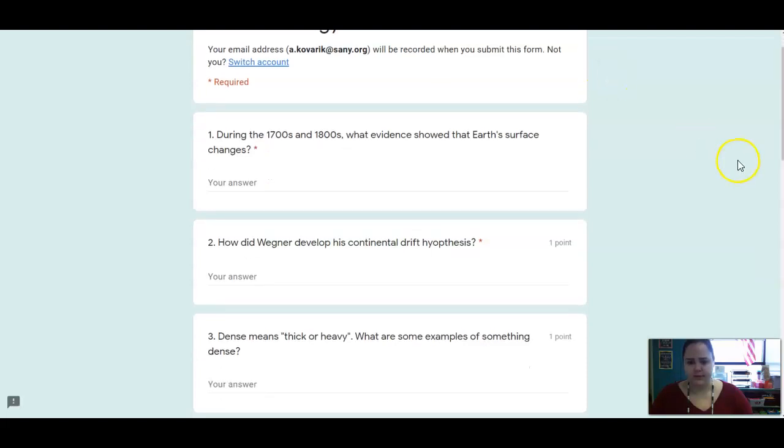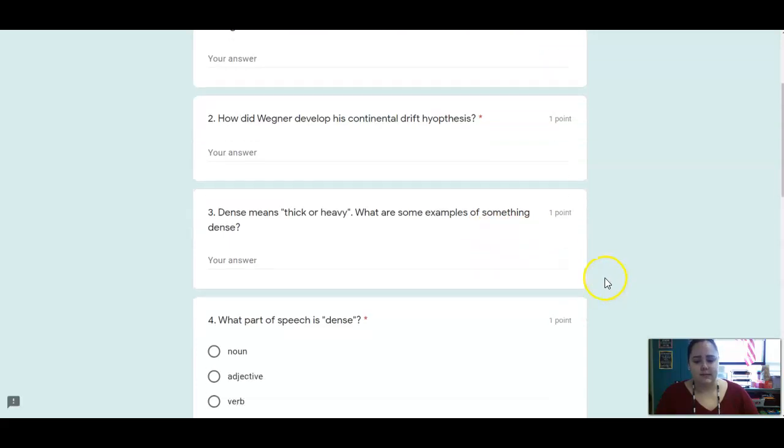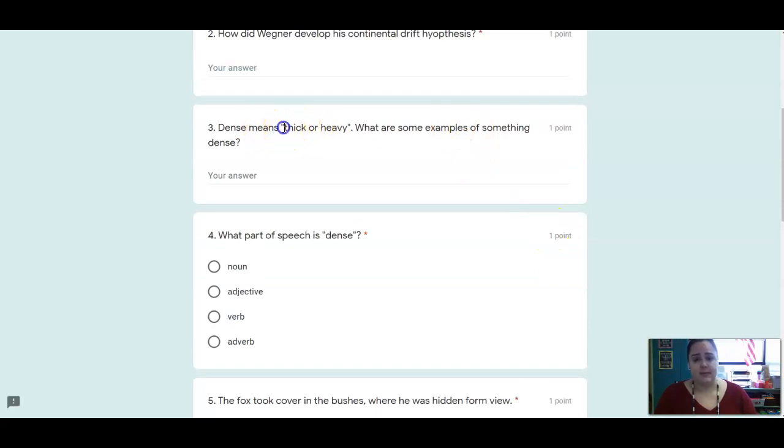All right, let's move on over to skills. You've got some writing questions here. So number one wants to know, during this time period, what was the evidence showing that the Earth's surface has changed? How did these scientists realize that once a long, long ago, the continents were not where they are today? Number two, how did Wegener develop his continental drift hypothesis? Number three, dense means thick or heavy. What are some examples of something dense? Number four, what part of speech is dense? So if dense is something that is thick or heavy, is that a noun, adjective, verb, or adverb?